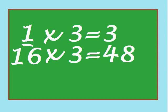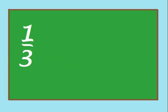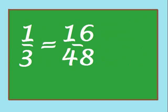Whatever you do to the denominator, you have to do to the numerator. Therefore, we have to multiply the one by three. That gives us three-forty-eighths. In the fraction one-third, if we want the denominator to be forty-eight, we have to multiply by sixteen. So now we have to multiply the numerator by sixteen. That gives us sixteen-forty-eighths.